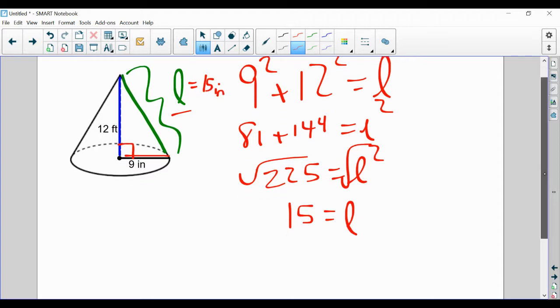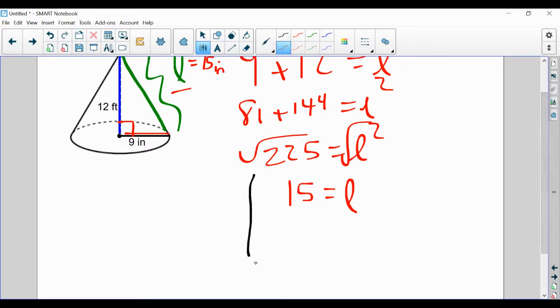Great. Now I have everything I need to find the surface area. My surface area is pi r squared plus pi r L. My radius is 9. My slant height is 15.